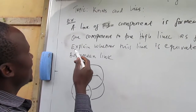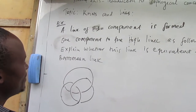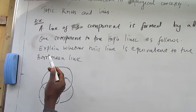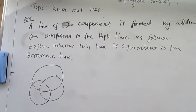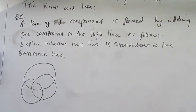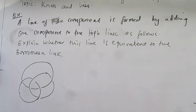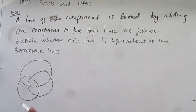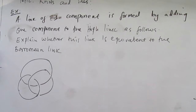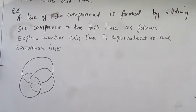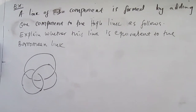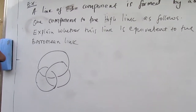As an exercise: a link of three components is formed by adding one component to the Hopf link as shown. Explain whether this link is equivalent to the Borromean link.